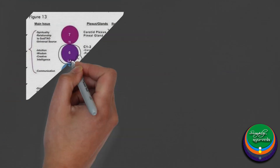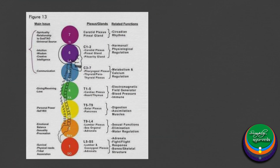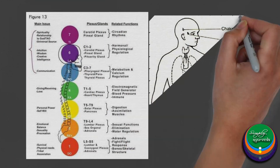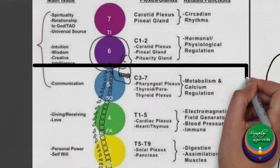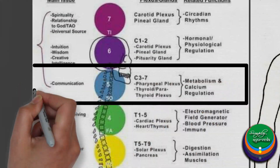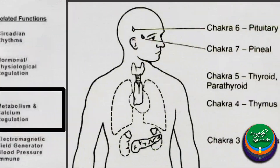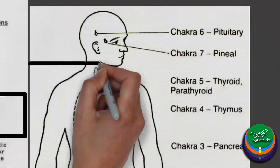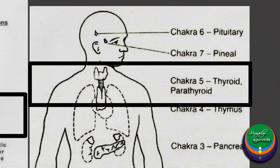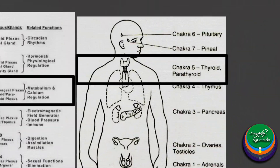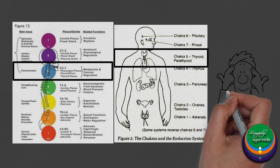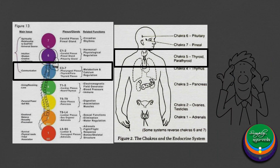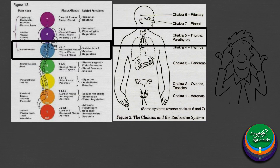We know that each of the chakras corresponds with an endocrine gland based on its location. Vishuddha chakra is related to the thyroid and parathyroid glands. Do you find any relationship between these glands and Asthi? Think about it — we will learn more about it later in this video.